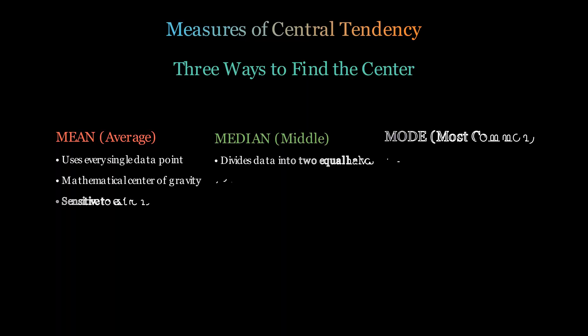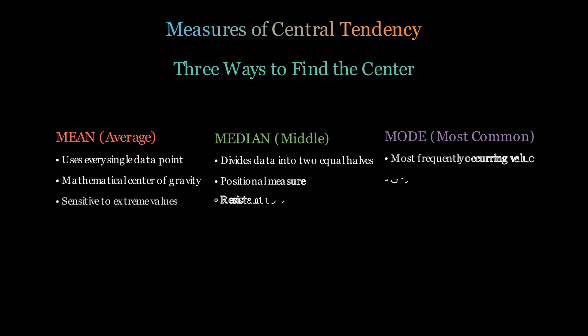The median is like the middle ground—it divides your data into two equal halves, making it incredibly resistant to outliers. It's the diplomatic center that isn't swayed by extremes.